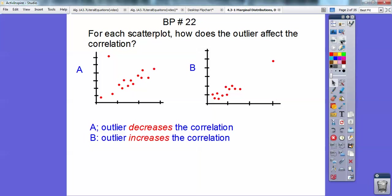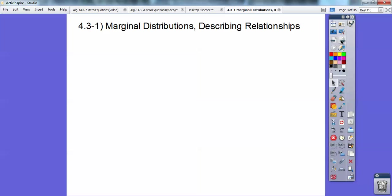Alright, so here we go. Section 4.3-1, this is on marginal distributions and describing relationships. So we're going to describe percentages of pieces of a graph right here. So we're going to build a table, and it's talking about the education and age, and I'm going to use this as an example. So you're going to have to pause this video to copy down this chart.